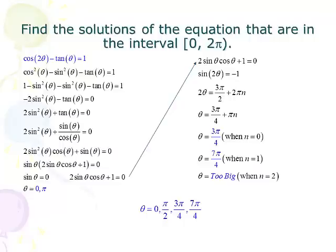I am going to use the πn's here. So sin 2θ = -1. That happens at 3π/2. That's when sine is -1 plus 2πn. So 2θ = 3π/2 + 2πn. I divide both sides by two, and I get θ = 3π/4 + πn.